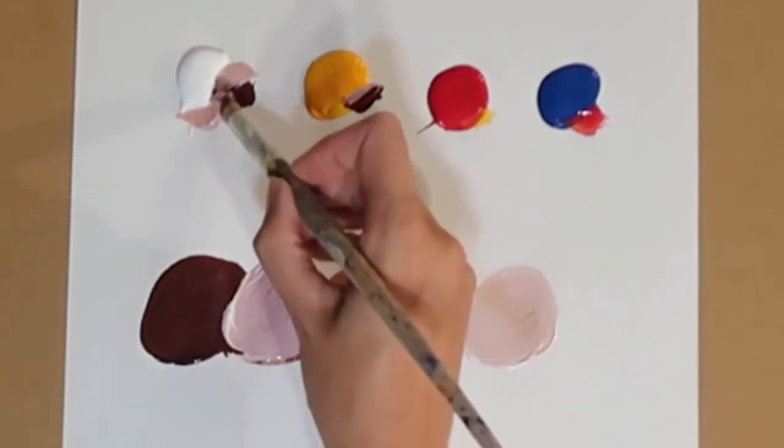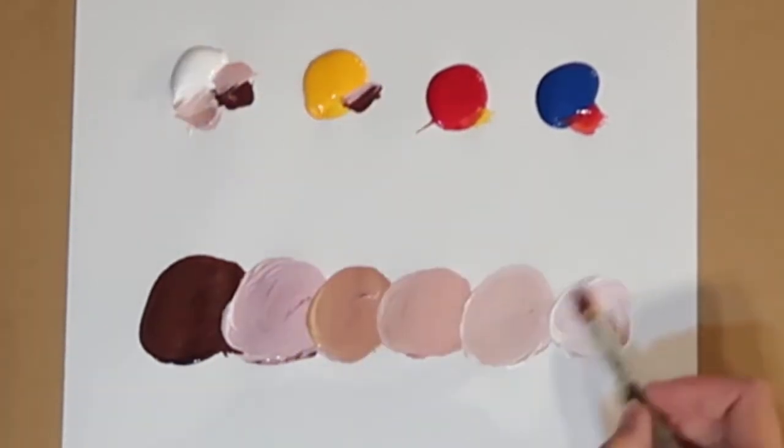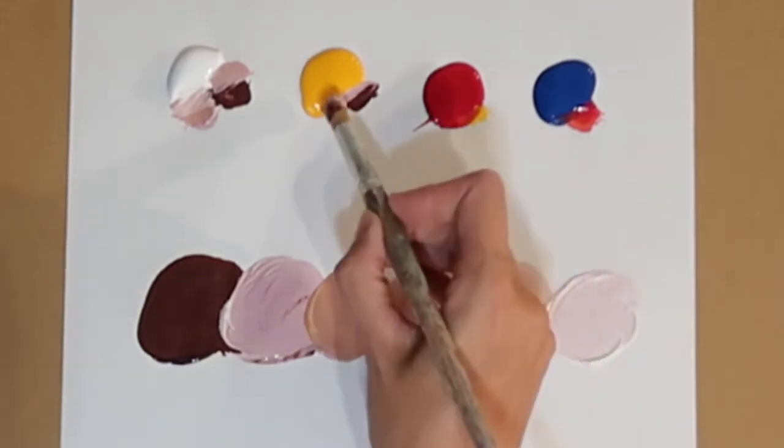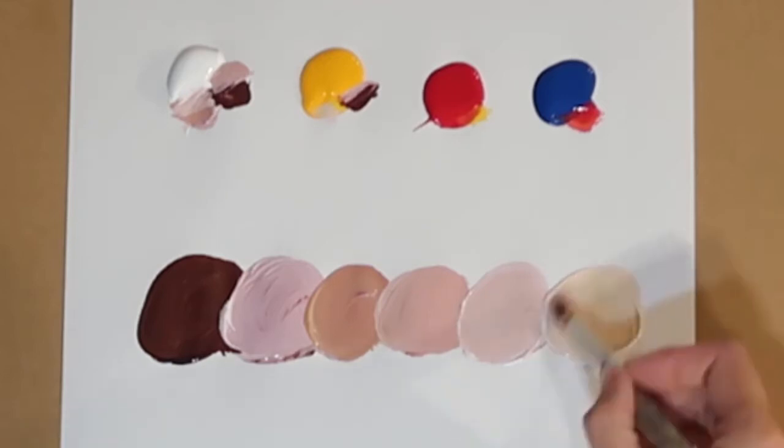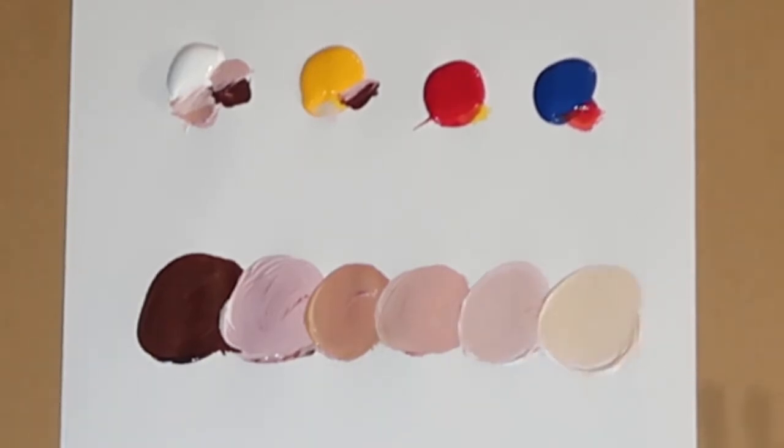But you know it just gives you good reference points. I'm just going to keep adding white here, so I'm going to get to my coolest point, a little bit more yellow I think as well. And then that's what you would go with, that's more of a traditional Caucasian skin tone.